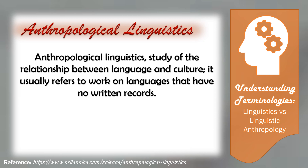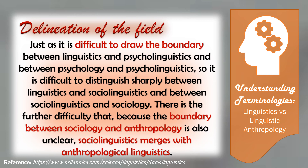One more terminology closely related to the first three is anthropological linguistics. Britannica defines anthropological linguistics as the study of the relationship between language and culture. It usually refers to the work on languages that have no written records. You may have noticed that these terms greatly intersect the very scope of linguistic anthropology. But Britannica also notes that just as it is difficult to draw the boundary between linguistics and psycholinguistics, and between psychology and psycholinguistics, so it is difficult to distinguish sharply between linguistics and sociolinguistics, and between sociolinguistics and sociology. There is the further difficulty that, because the boundary between sociology and anthropology is also unclear, sociolinguistics merges with anthropological linguistics.